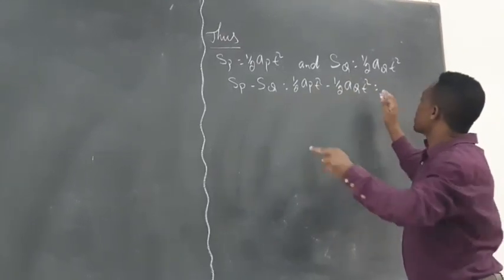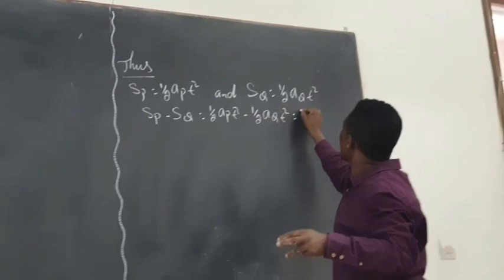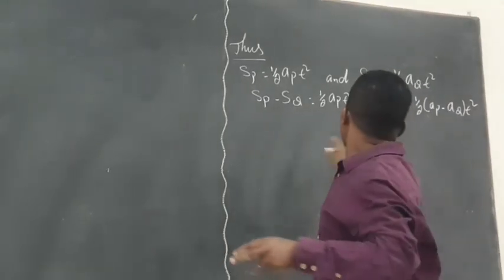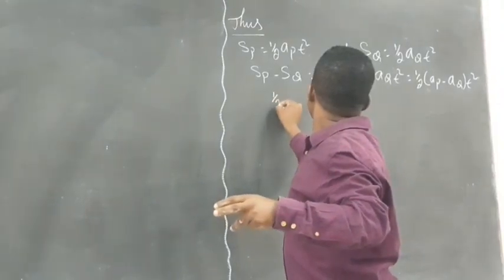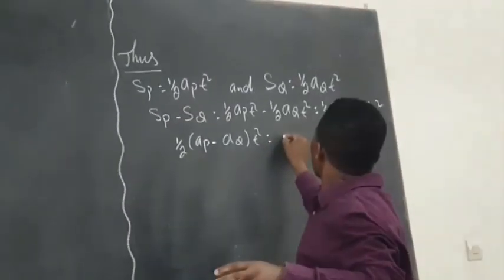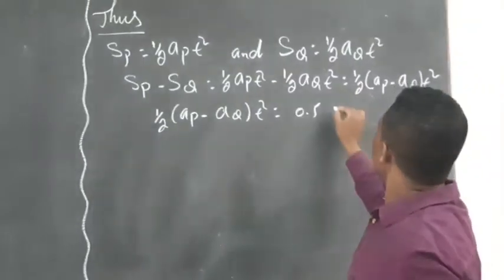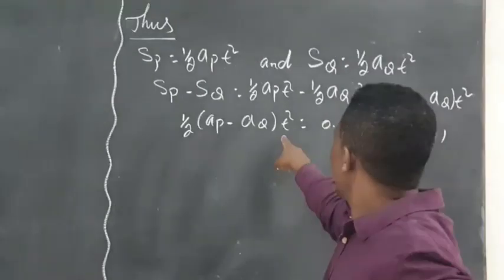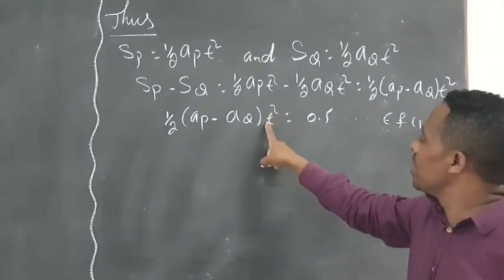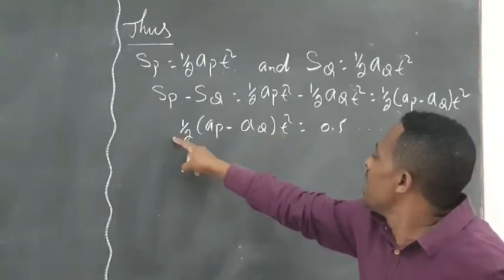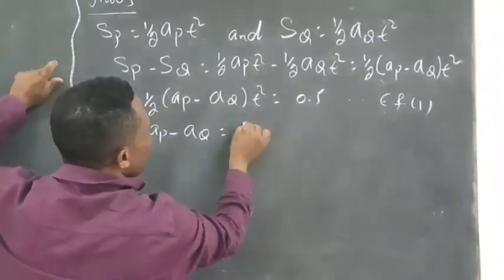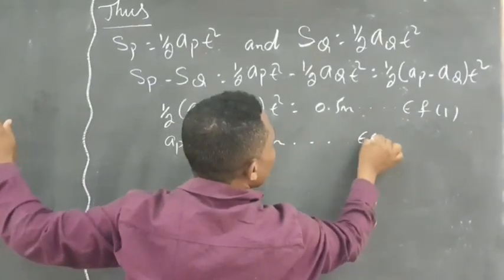Which is half times (A P minus A Q) times t squared, which is equal to 0.5. Let this be equation 1. But look, this is at t equals 1 second. Just insert t equals 1 and it becomes A P minus A Q which is equal to 1 meter. This is equation 1.